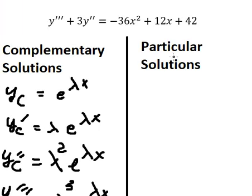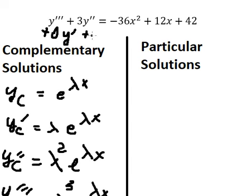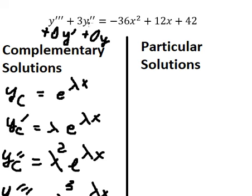Now let's go to the particular solution. We have the right-hand side, and because the highest power is number two, we start at the second derivative here. We need to work out the form of yp accordingly.